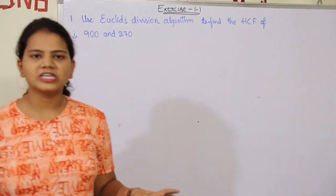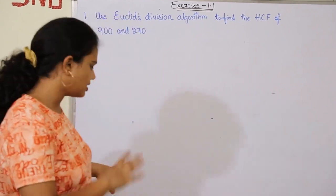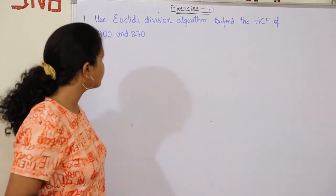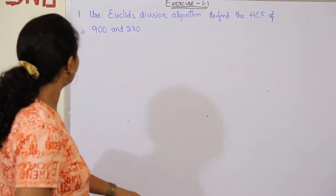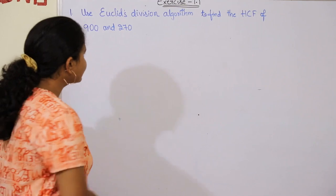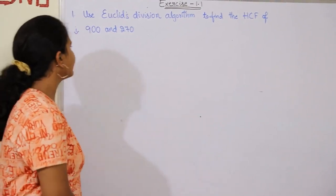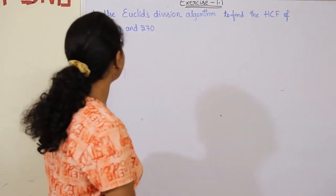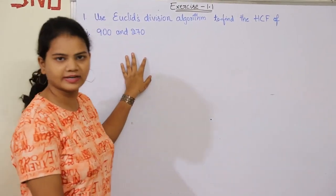Hey guys, I'm Gaksha and I'm back again with the next lesson: Real Numbers. The first question here: use Euclid's division algorithm to find the HCF of 900 and 270.